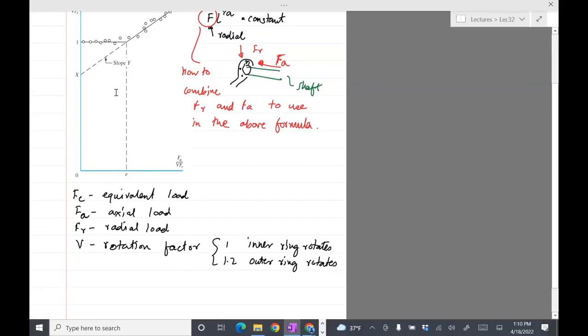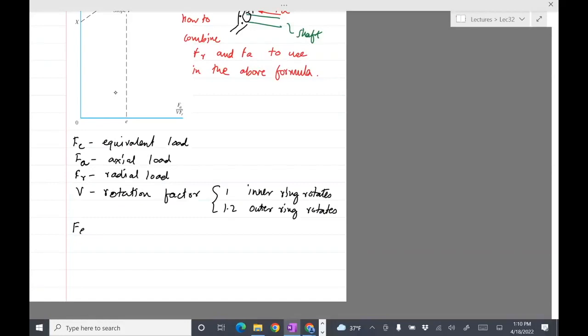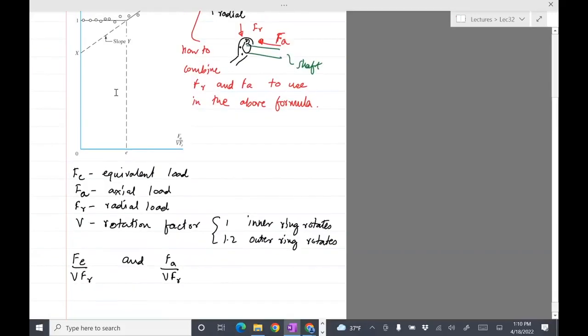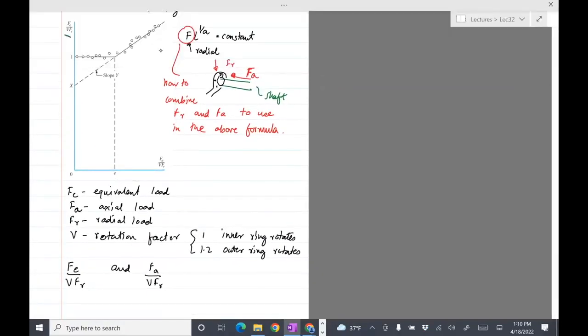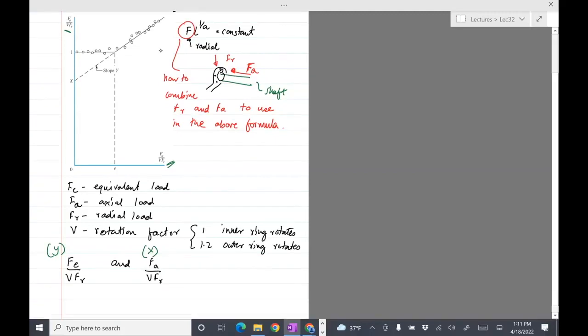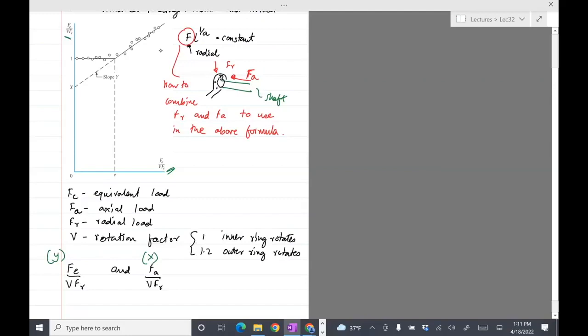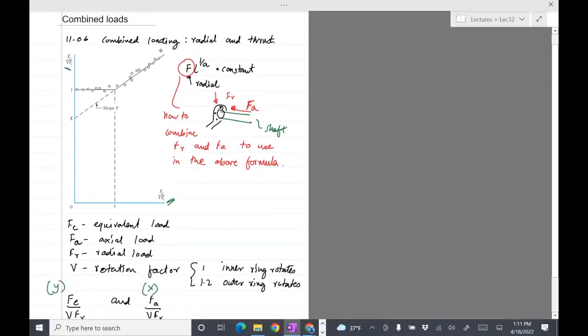So once we've defined this, what we do is we make a plot of the equivalent load versus V times FR and FA divided by V times FR. And that plot is shown here. You can see that they actually fall in a nice fashion where it's more or less flat on the left side up to here. Those circles are the data points. And then it slopes up.